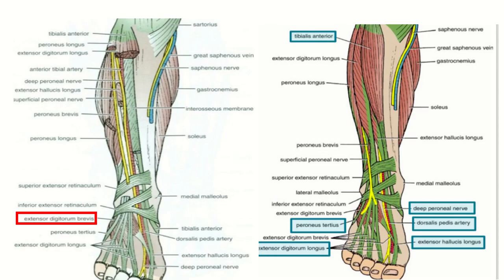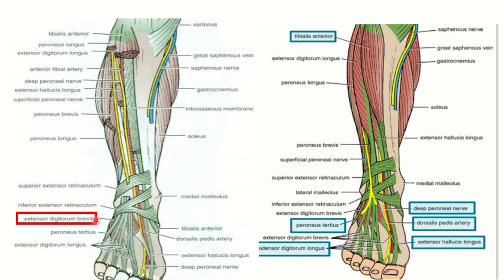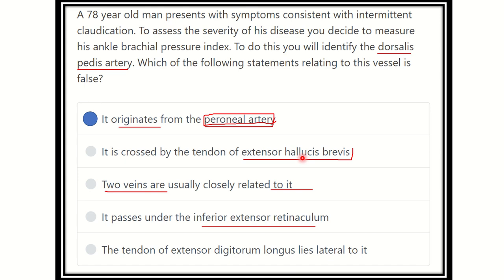The inferior extensor retinaculum is confirmed in the image, and the vessels are seen lying below it. Finally, the tendon of extensor digitorum longus lies lateral to the dorsalis pedis artery — also true. Medially, the two other important tendons are tibialis anterior and extensor hallucis longus. This concludes the discussion of the dorsalis pedis artery. Thank you all.